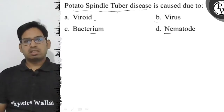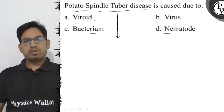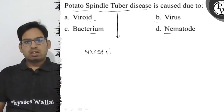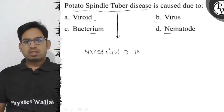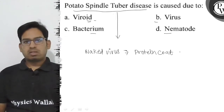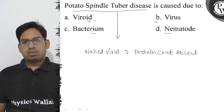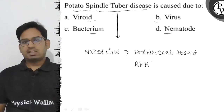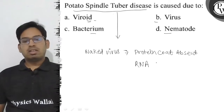Potato spindle tuber disease is caused due to the first option — viroid. A viroid is a simple RNA.